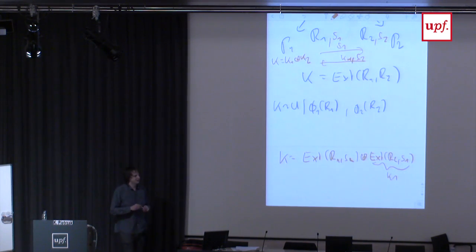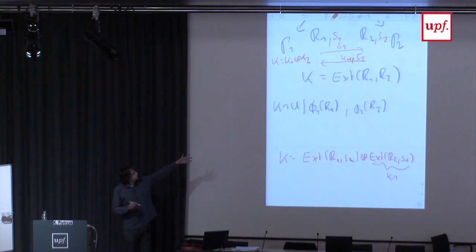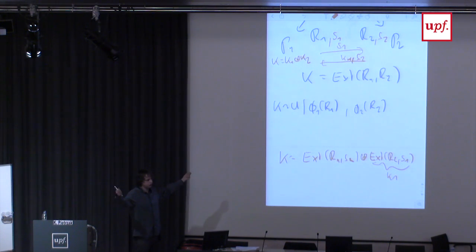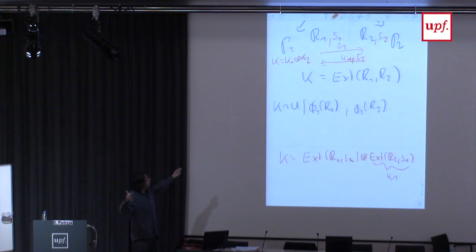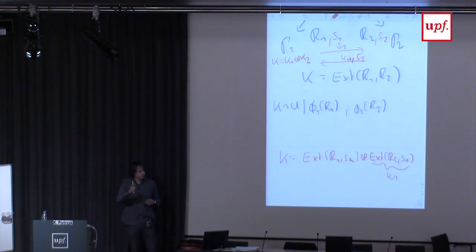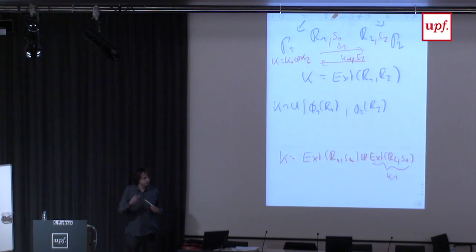Why do you have to use a two-source extractor in the upper construction? Because there is no short uniform seed — I just have these two huge R1 and R2. The lower construction uses a regular extractor because I gave them short seeds S1 and S2. The advantage is they can reconstruct much more efficiently by just exchanging these short seeds.